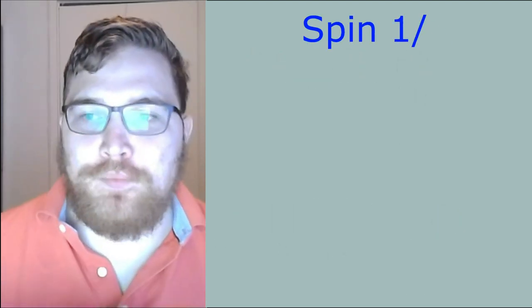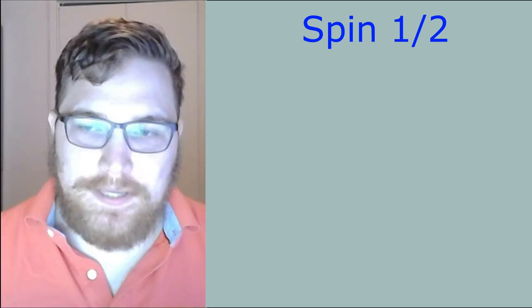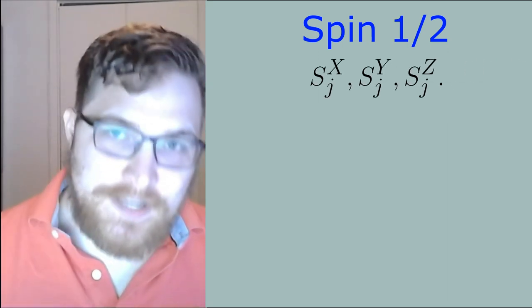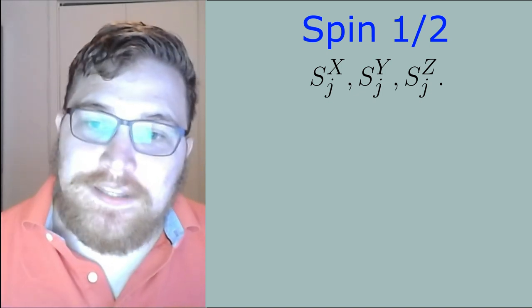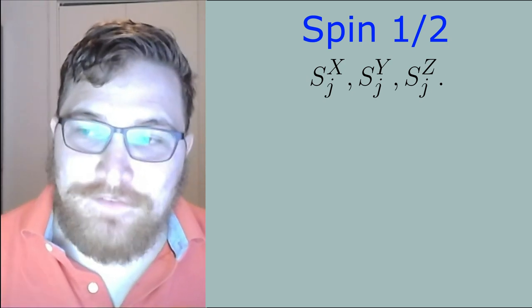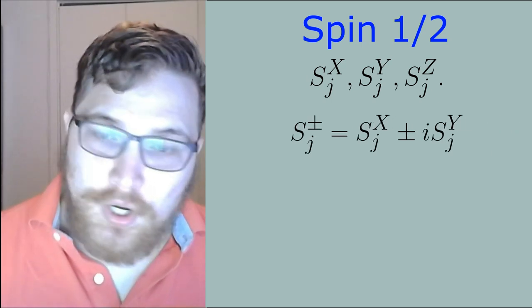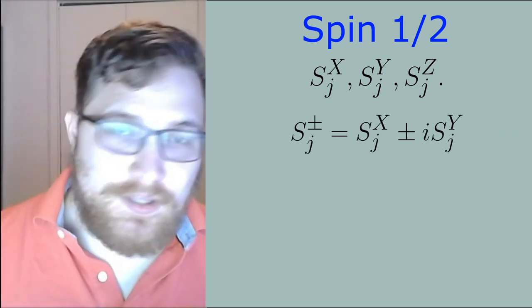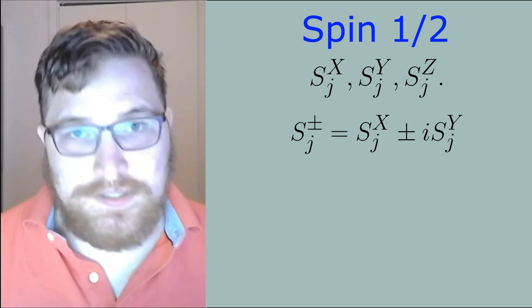For the spin degrees of freedom, we can define the usual observables for each individual lattice site. That is, the spin in the x direction, the y direction, and the z direction for each lattice site j. To relate these to fermionic creation and annihilation operators, it's convenient to introduce the raising and lowering operators written here in terms of sums of the x and the y component of the spins. These expressions are pretty standard.